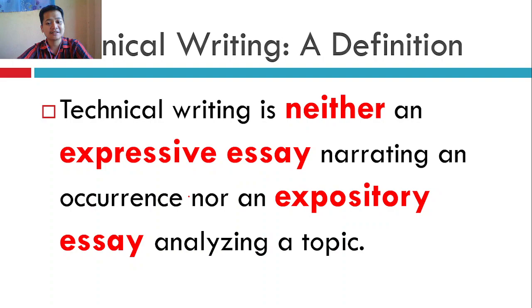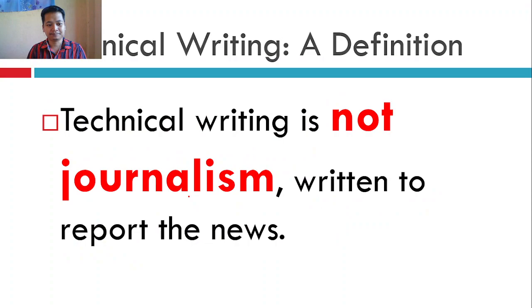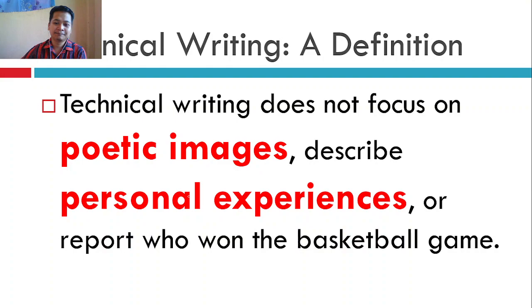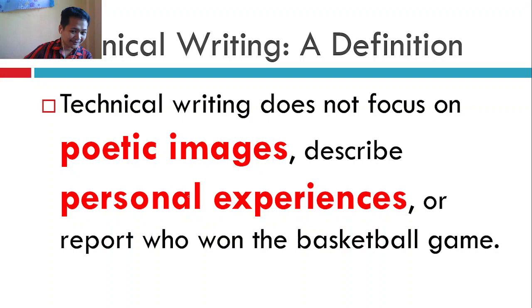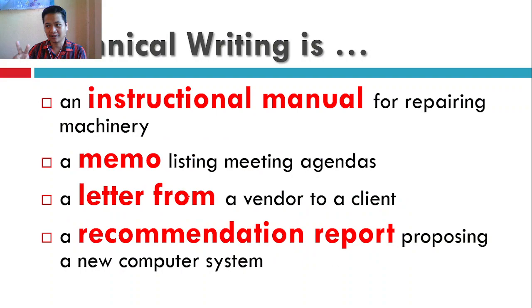Technical writing is neither an expressive essay narrating an occurrence, nor expository writing that analyzes a topic, nor journalism that reports news. Technical writing does not focus on poetic images, does not describe personal experiences, and does not report who won a basketball game — that's journalism. That's how different these types of writing are from technical writing.